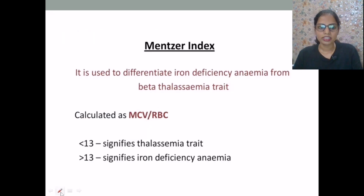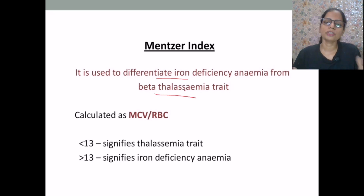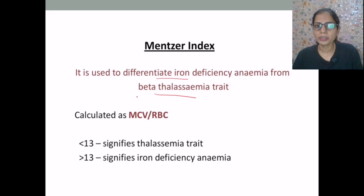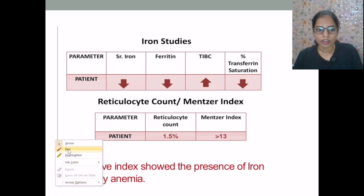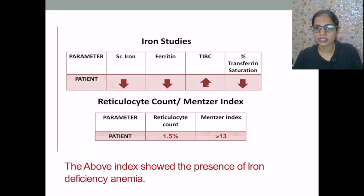The Menzter index is used to differentiate between iron deficiency anemia and beta thalassemia trait, since both can present with microcytic hypochromic RBCs. The Menzter index is calculated as MCV divided by RBC. If it is less than 13, it signifies thalassemia; if it is greater than 13, it signifies iron deficiency anemia. The iron studies show serum iron is decreased, ferritin is reduced, TIBC is elevated, and transferrin saturation is also reduced. The Menzter index here is found to be greater than 13, confirming iron deficiency anemia.